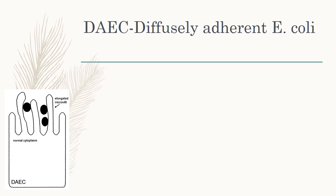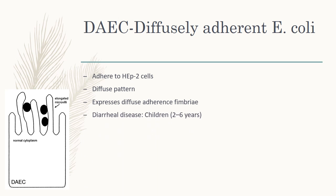The last one is DAEC, that is diffusely adherent E. coli. It is so named because of its ability to adhere to HEp-2 cells in a diffuse pattern. It expresses diffuse adherence fimbriae, which contribute to pathogenesis. DAEC causes diarrheal disease primarily in children aged 2 to 6 years.